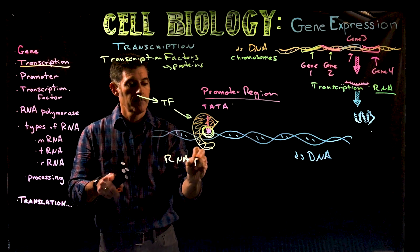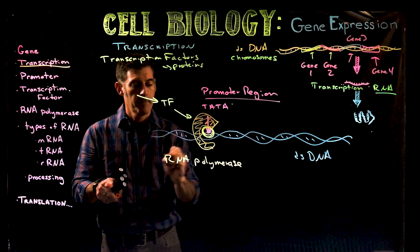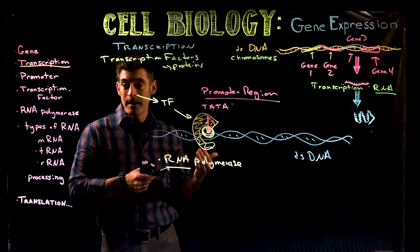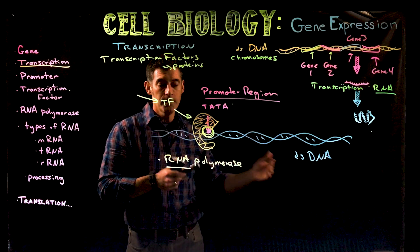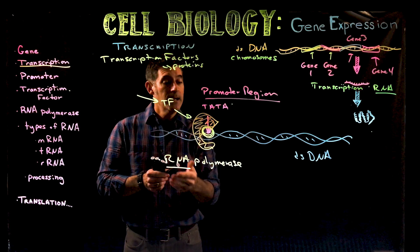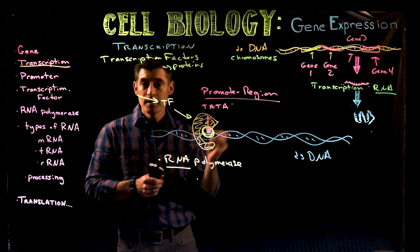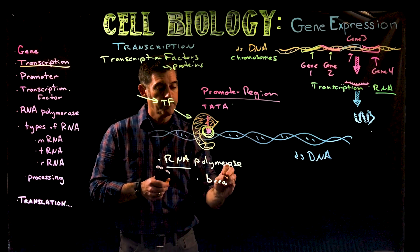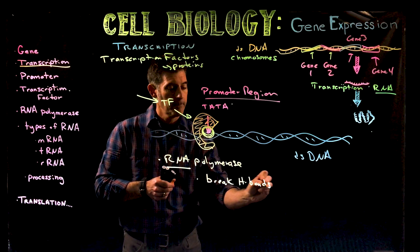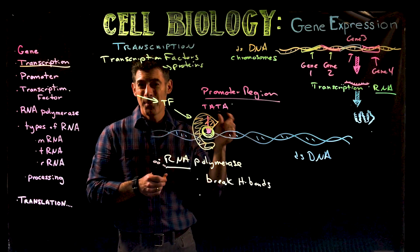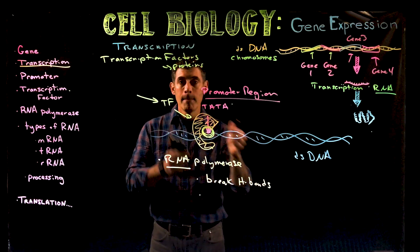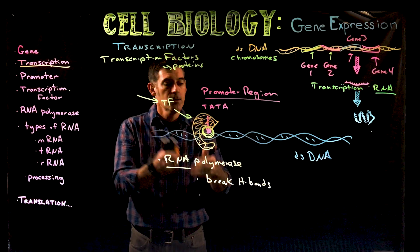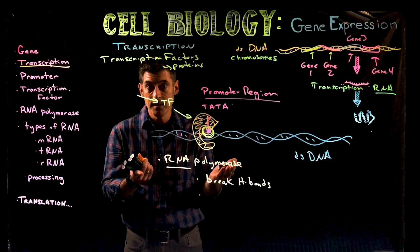Once the transcription factor binds to the promoter, the enzyme RNA polymerase will then bind to it. Remember in DNA replication we had DNA polymerase — here we have RNA polymerase. The nice thing about transcription is that RNA polymerase pretty much carries out all the jobs. This double-stranded DNA is held together with hydrogen bonds, and the RNA polymerase will break those hydrogen bonds. Also, no primer is needed — if you remember the primer and primase in DNA replication, that primer was a little piece of RNA made by an RNA polymerase, so RNA polymerase can do it itself.